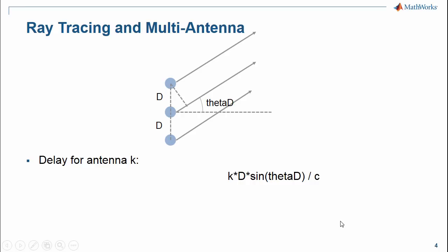For the transmit antenna array, a signal leaving at angle theta d incurs a delay from antenna k compared to antenna 0, that is k multiplied by d multiplied by sine theta d divided by the speed of light.